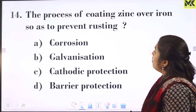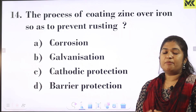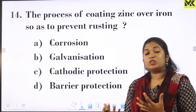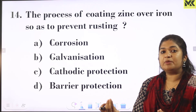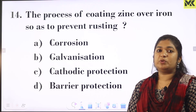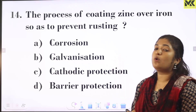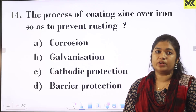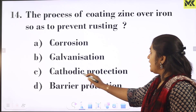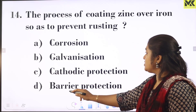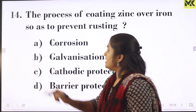The process of coating zinc over iron to prevent rusting is called galvanization. The options include corrosion, galvanization, cathodic protection, and barrier protection. The answer is Option B: galvanization.